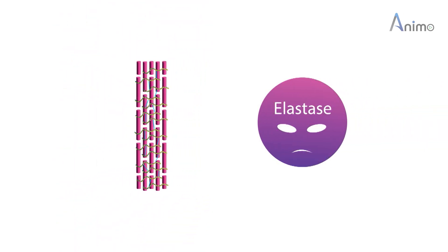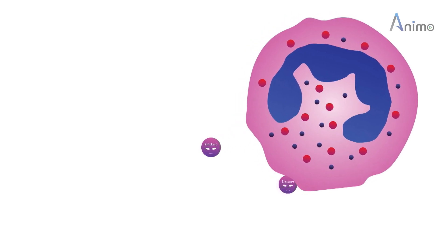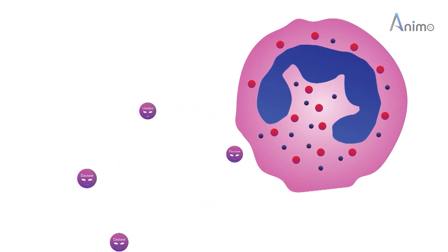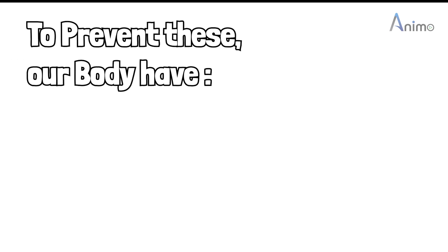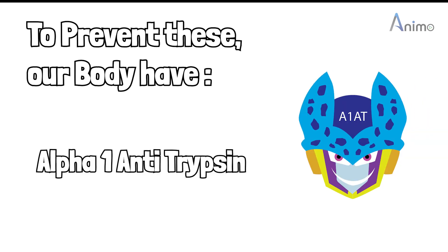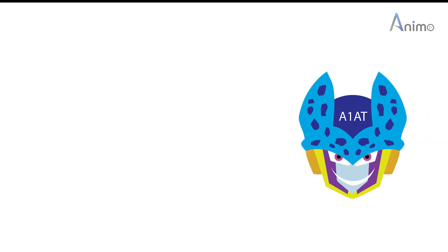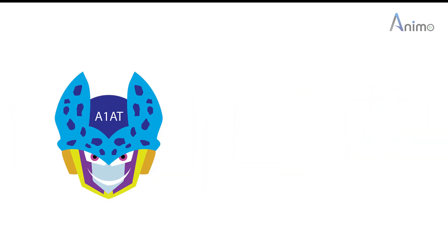Elastin is broken down by elastase. These are the enzymes which are released by neutrophils during infection or inflammation. And when elastin is destroyed, tissue also gets destroyed. To prevent this, our body has alpha-1 antitrypsin which can destroy this elastase as well.